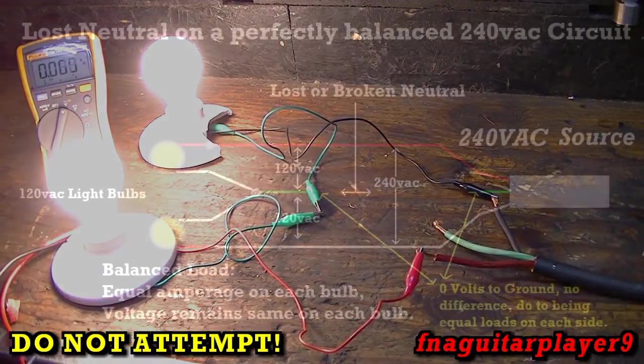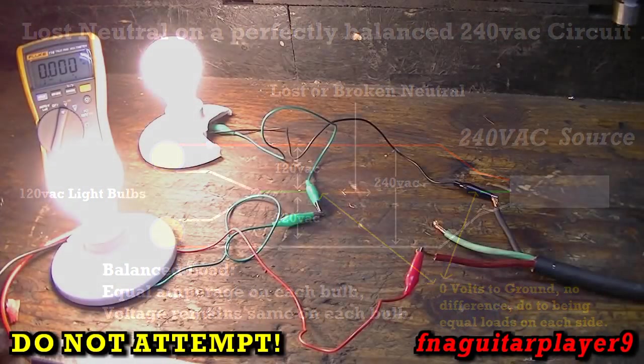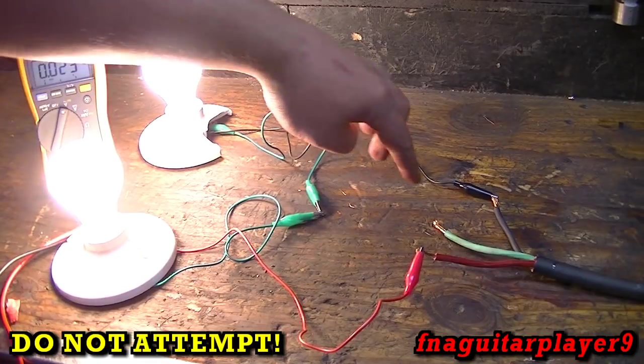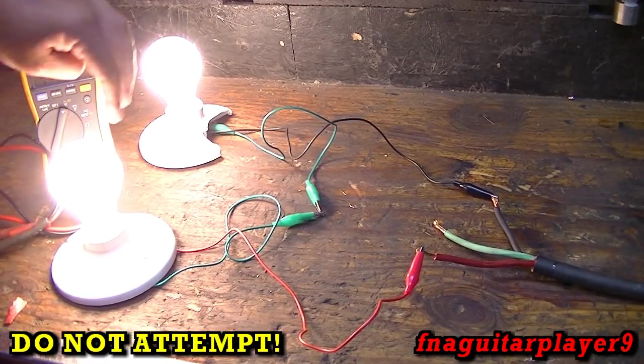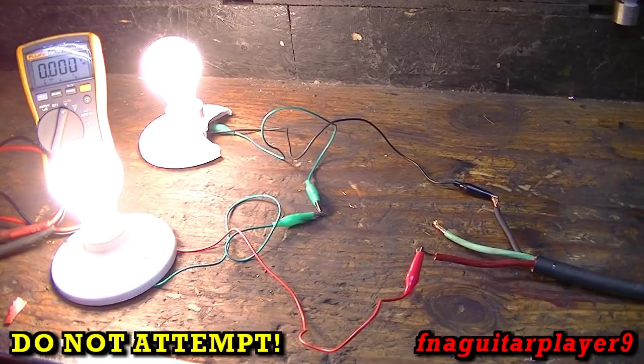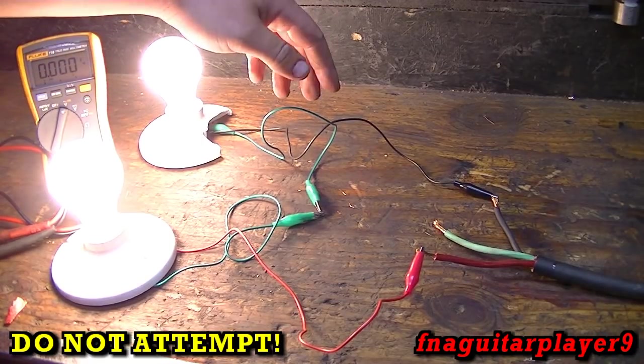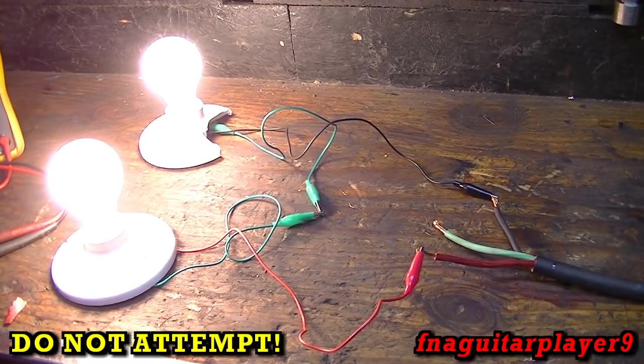Okay, so now in a perfect world you wouldn't need the neutral conductor on a 220 circuit. But pretend that these two light bulbs represent a heating element and, say, an electric furnace. You also usually have the blower motor running off 120, so let's hook up a third light bulb to simulate the motor.